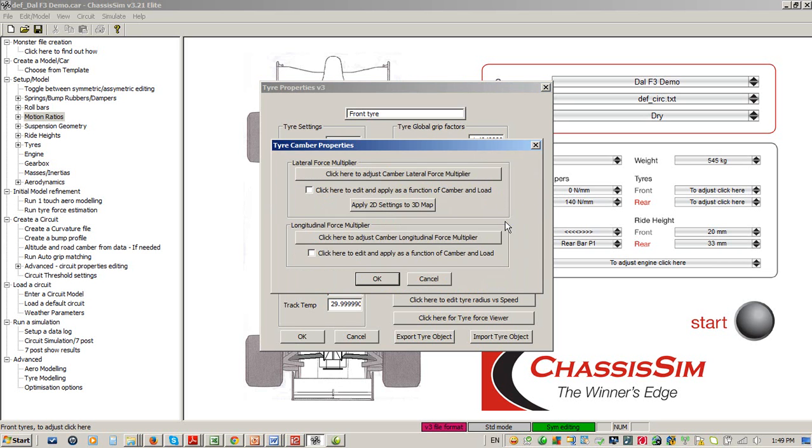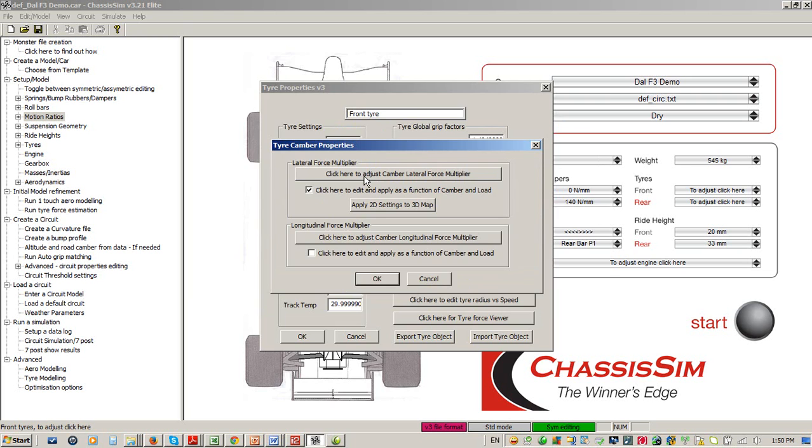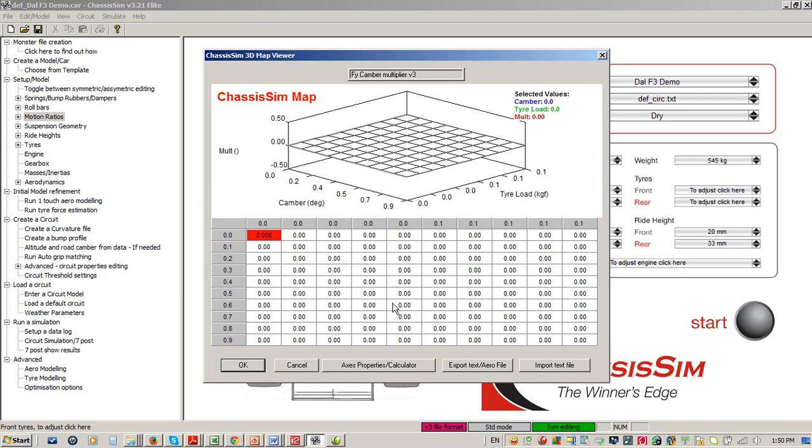One method I would suggest is that you'll see here in your tire cam properties here, I'll just click on here. This is pretty much that curve that we spoke about before. But if you click on here, you've now got the option to edit that three dimensionally.